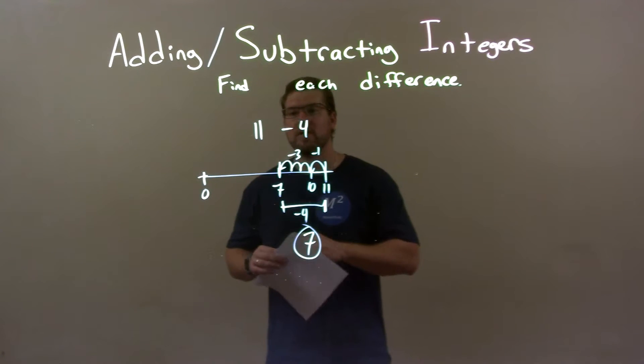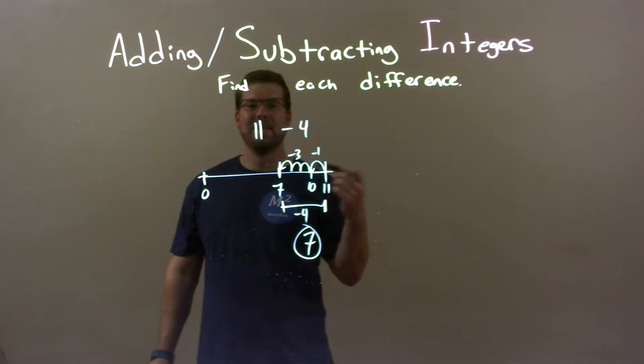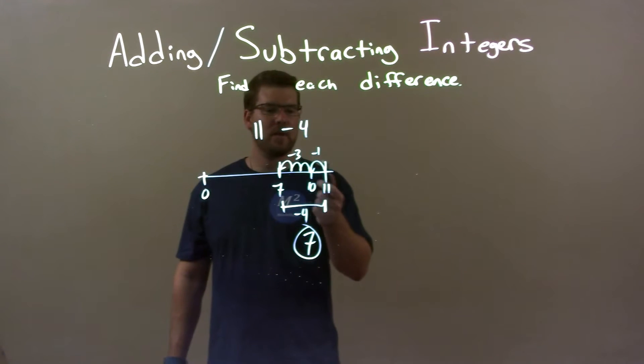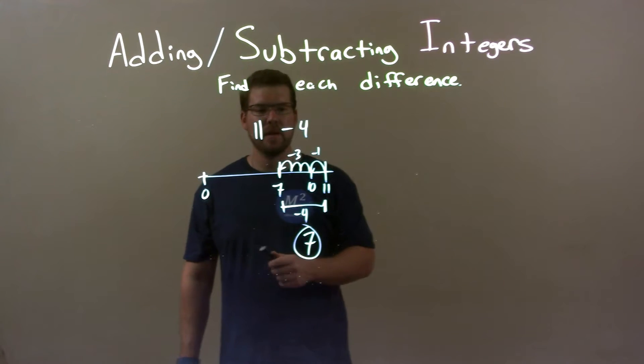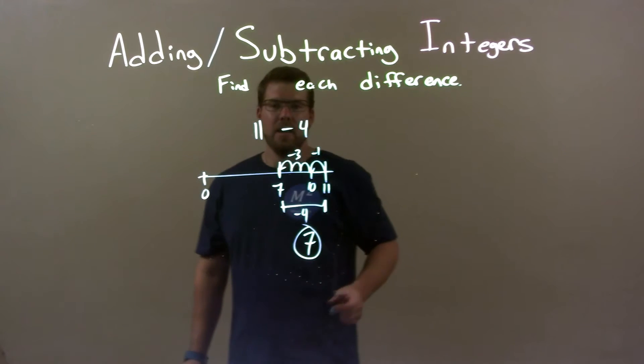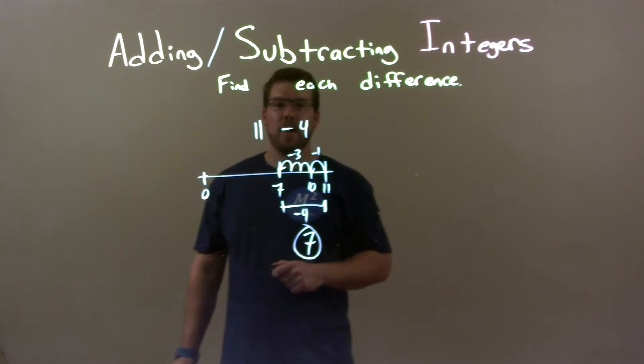So quick recap, we're getting 11 minus 4 and we have to find that difference. Start with 11 on the number line. I moved one unit to the left to get me to 10. That's a good base. And then I move three more units to get me to 7 to the left. And so negative 3 plus negative 1 was a negative 4. So again our final answer here is just a positive 7.